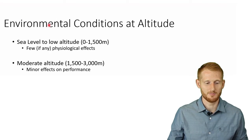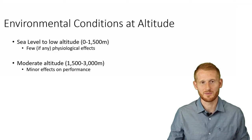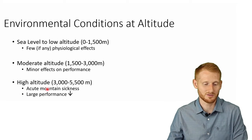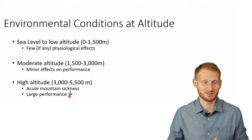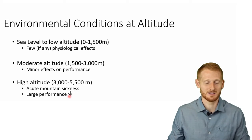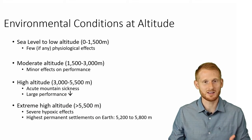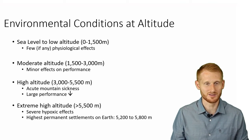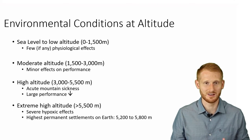For our purposes, altitude is defined as a minimum of 1,500 meters — about a mile up — which is roughly Denver, Colorado. High altitude is about 3,000 to 5,500 meters, where we start to see mountain sickness from the negative health consequences of reduced oxygen density. Extreme altitude is greater than 5,500 meters, where the highest permanent settlements on Earth are located, such as some settlements in the Chilean mountains, and this causes severe hypoxia and severe impact on aerobic function.